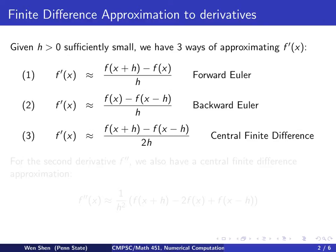The first method is called forward Euler. It approximates the derivative of f at x with this expression: you evaluate f at x plus h — going a little bit to the right — evaluate the function, subtract the function value at x, and then divide by the step size h. The name 'forward' comes from the fact that you take a step forward to gather your information, and of course it's due to Euler.